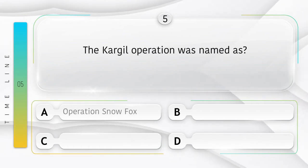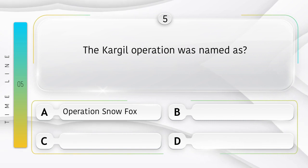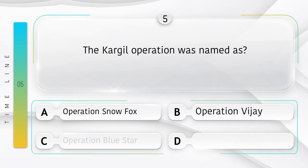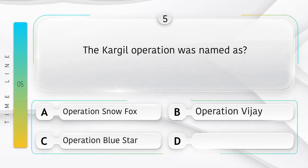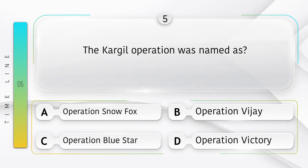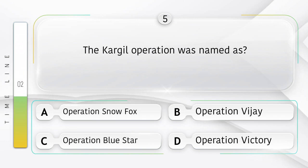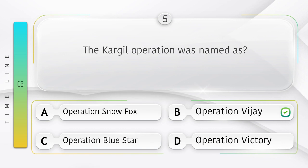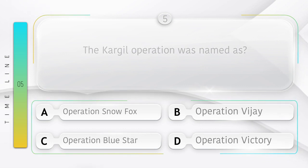The Kargil operation was named as: option A: Operation Snow Fox, B: Operation Vijay, C: Operation Blue Star, D: Operation Victory. Answer is option B, Operation Vijay.